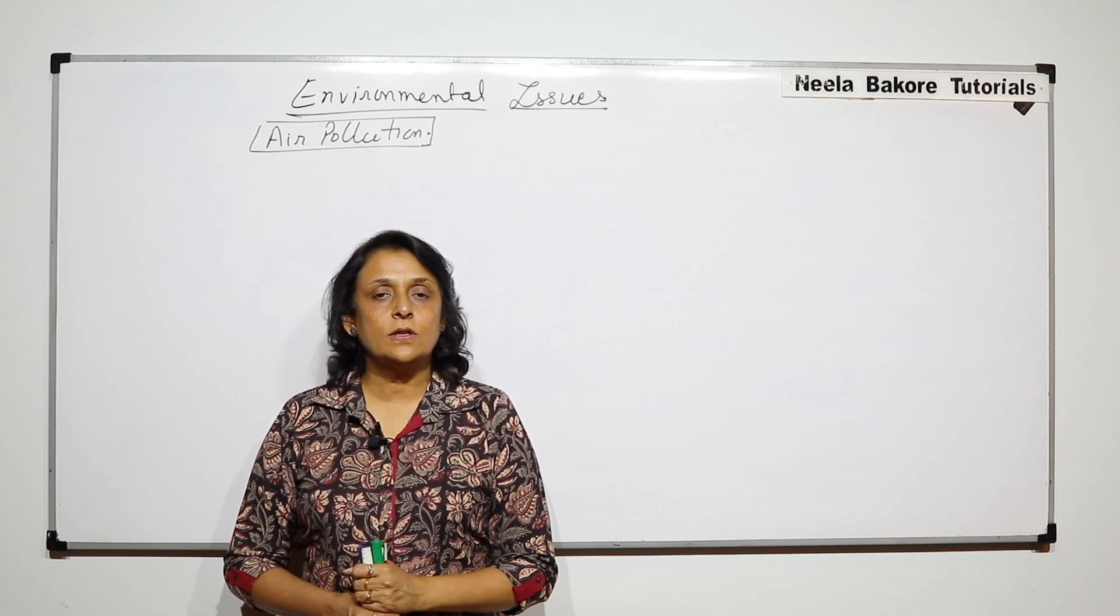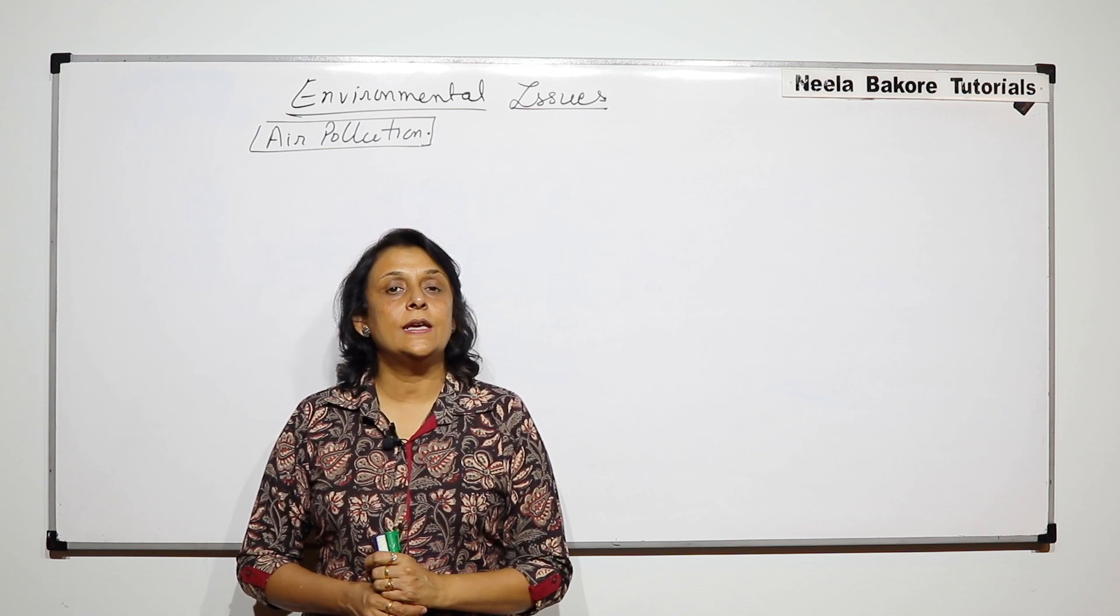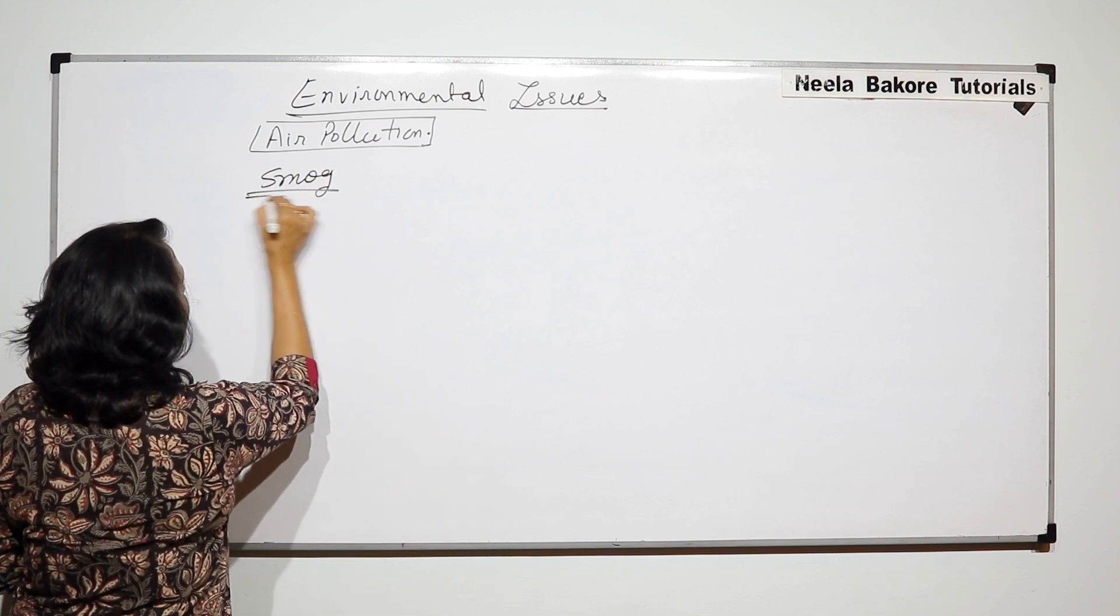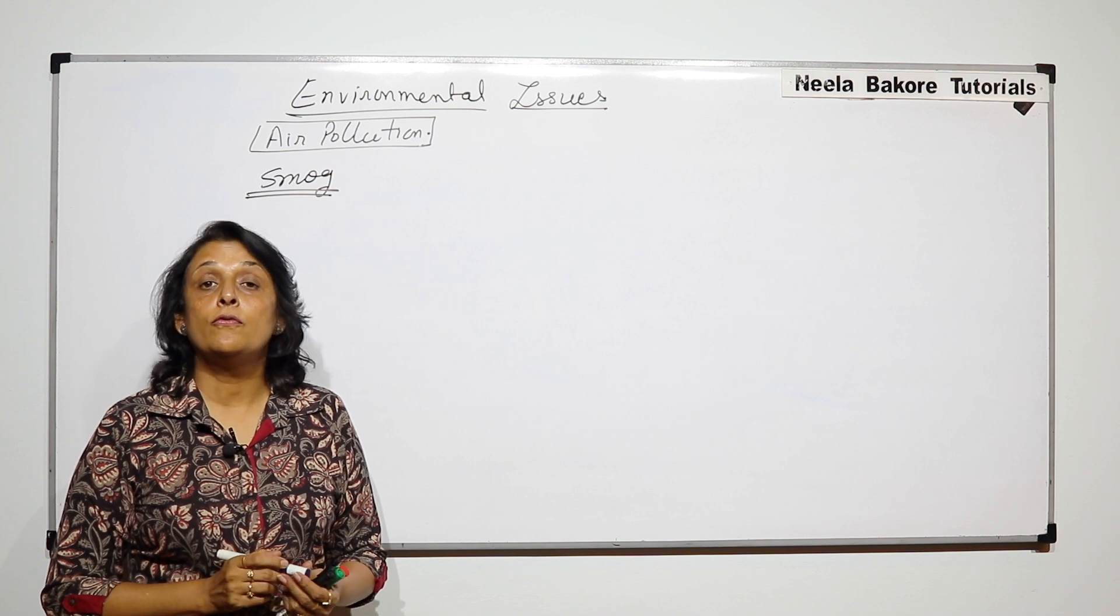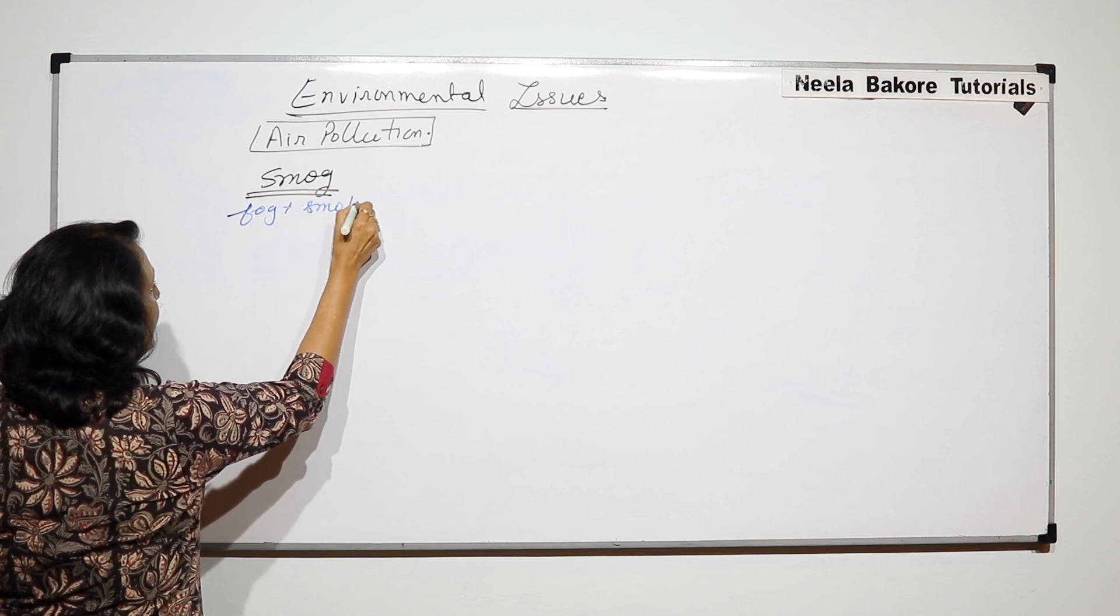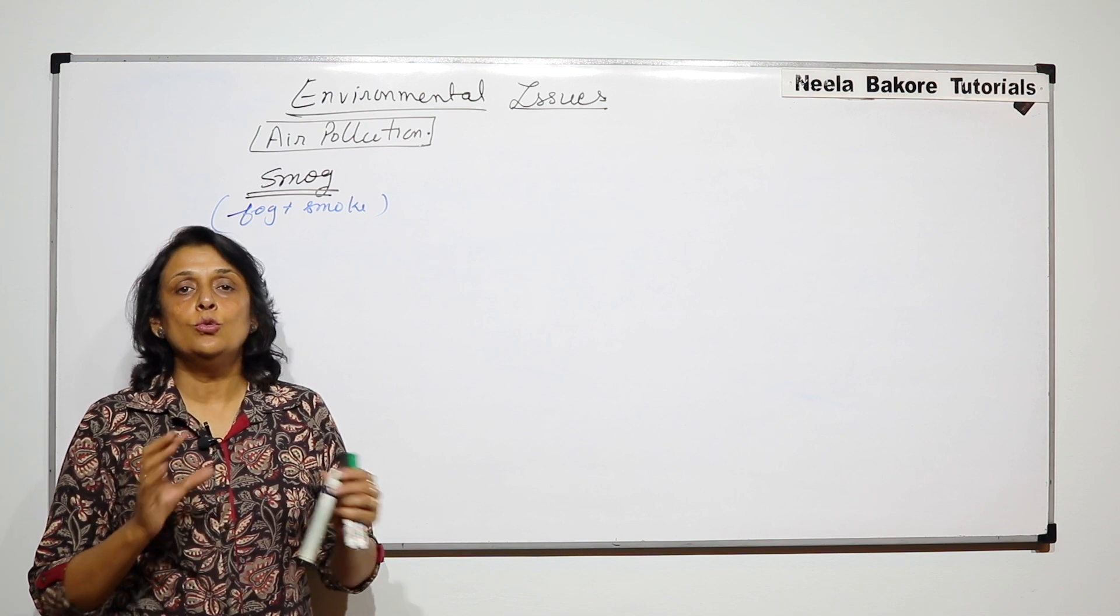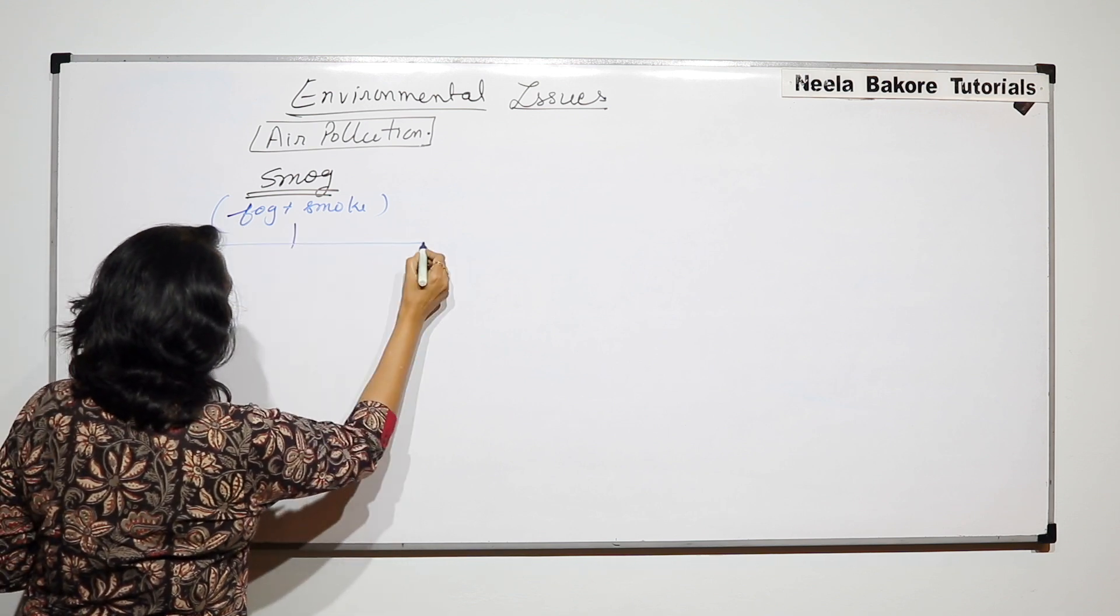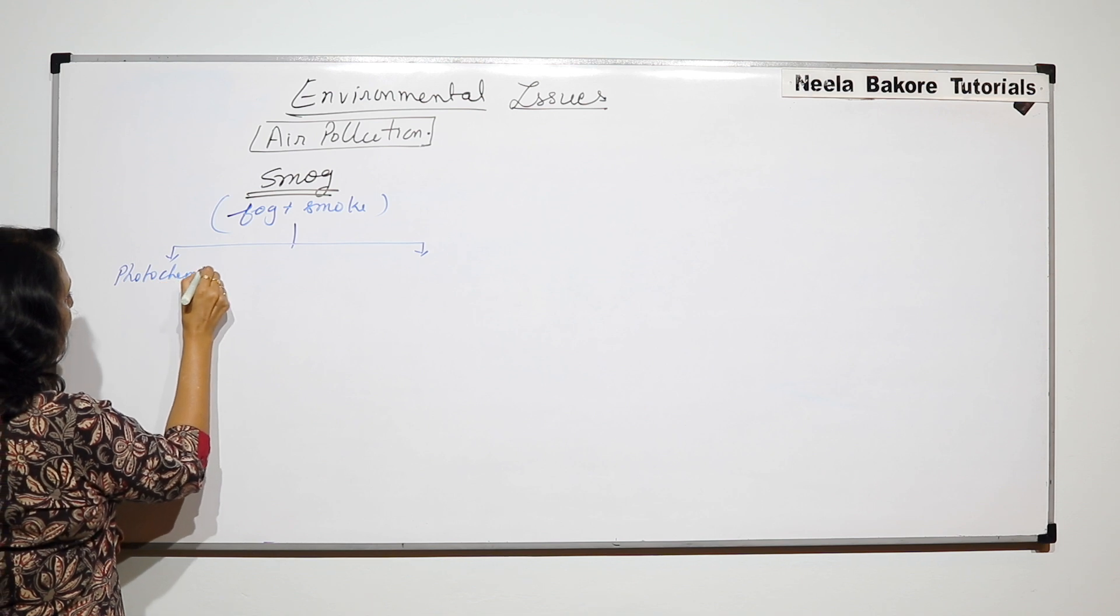In the previous part we talked about various causes of air pollution, and one of the causes is smog. So let us first talk about this particular air pollutant. The smog is actually a combination of fog and smoke. And depending upon the composition, the smog can be divided into two categories.